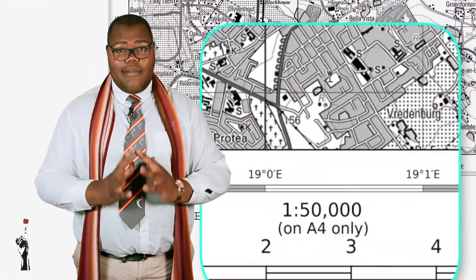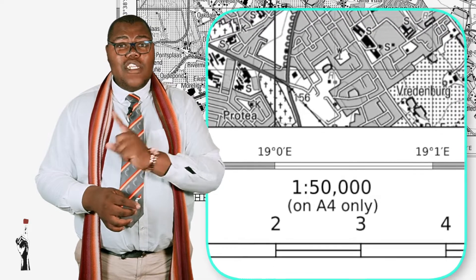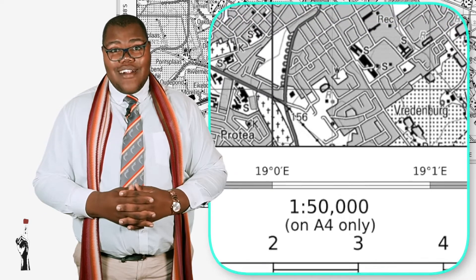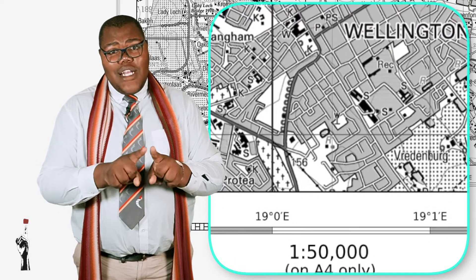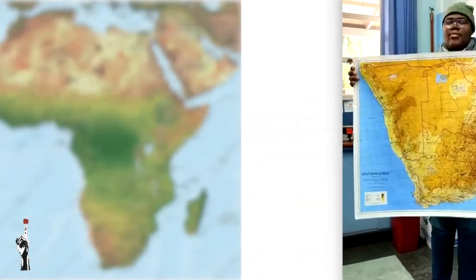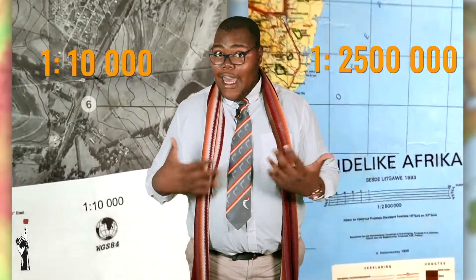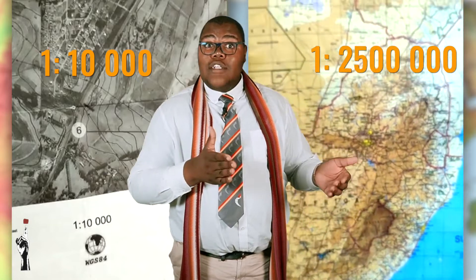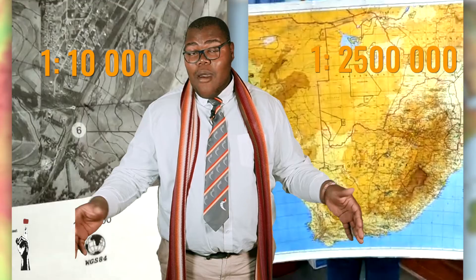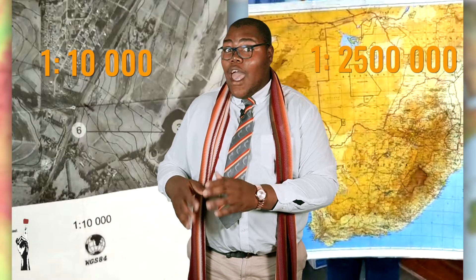Moving over to scale — most of the maps you'll be dealing with will be topographical maps with a scale of 1 to 50,000. What this means is 1 unit on the map is 50,000 units larger on the real ground. Every 1 centimeter measured on your map is equal to 50,000 centimeters on real ground. A map of 1 to 2.5 million covers a larger area but in very little detail, while a map of 1 to 10,000 covers a smaller area but in greater detail.